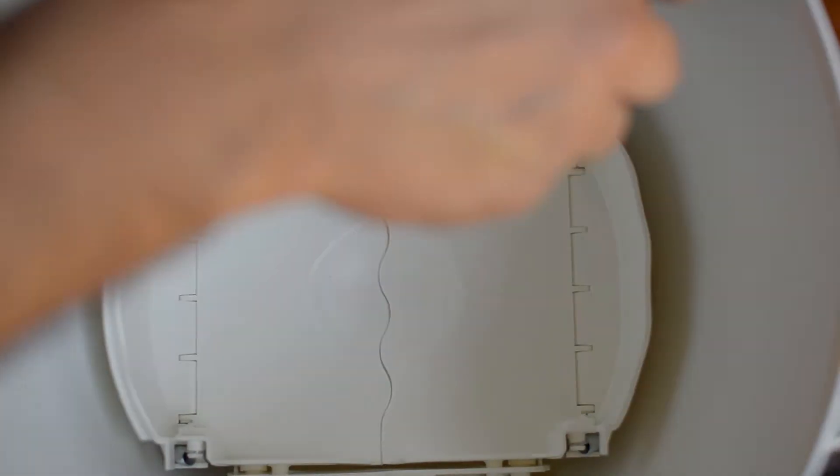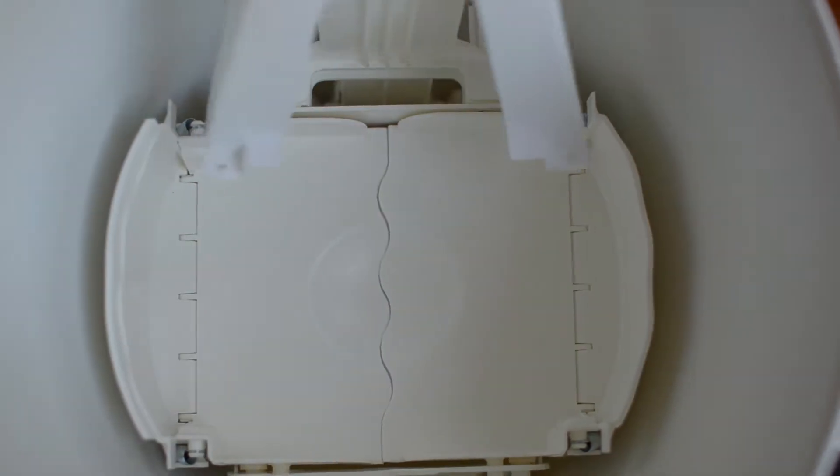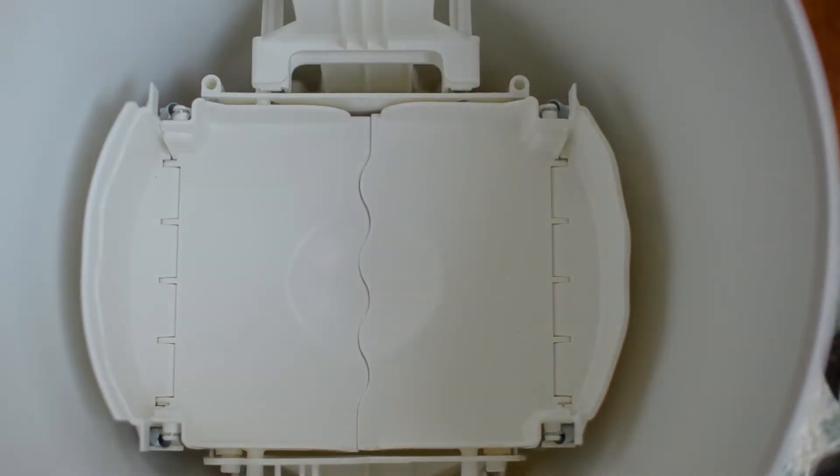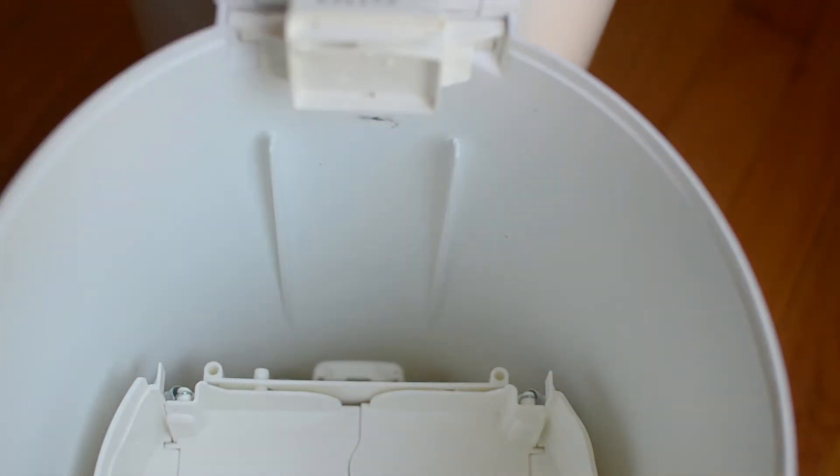Start by removing the two screws holding the lever. Once you remove the lever you'll have access to the other four screws. Remove these and lift out the flap assembly.